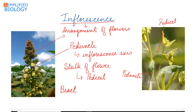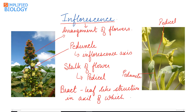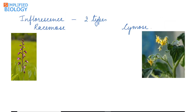A bract is a leaf-like structure which may be green in color or may be of different colors. It is a leaf-like structure in the axil of which a flower develops. In this picture we can see a bract, and the flower is developing in its axil. The same pattern repeats — flowers develop in the axil of each bract.